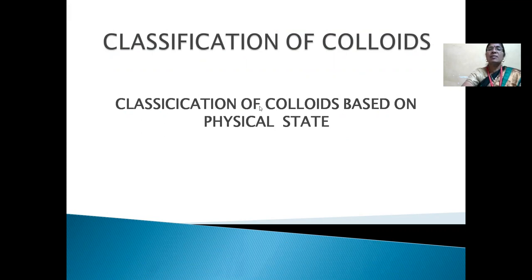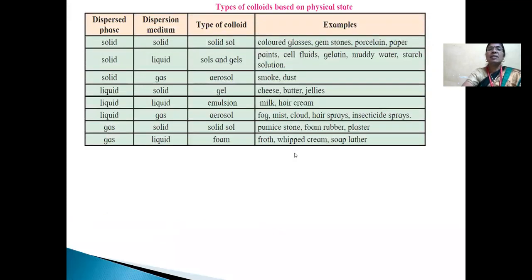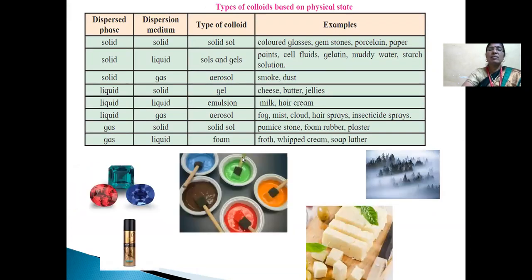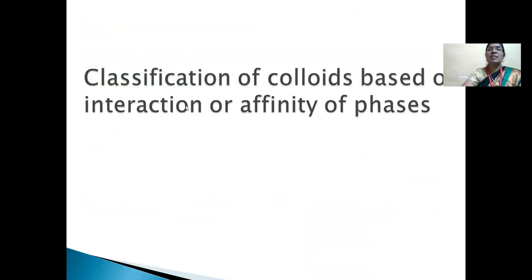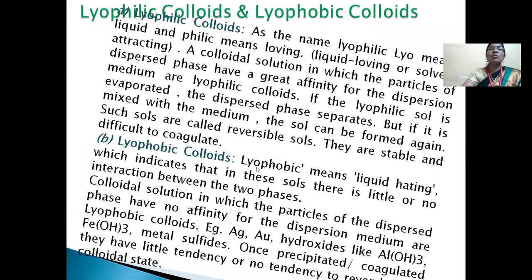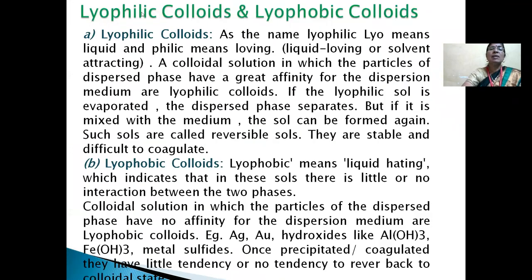Number one is classification of colloids based on physical state — there are eight types of colloids. Second, classification of colloids based on inter-reaction or affinity of phases. It can be divided into two types: lyophilic colloids and lyophobic colloids.